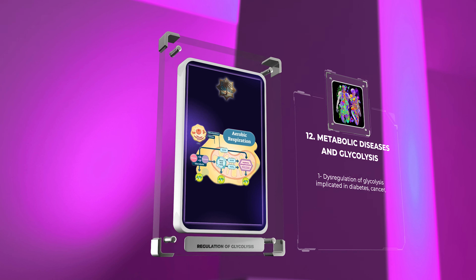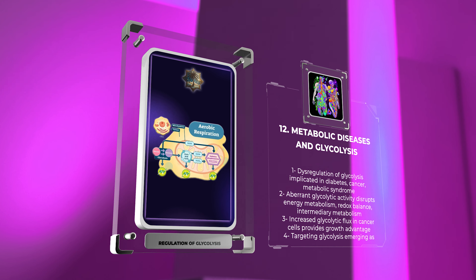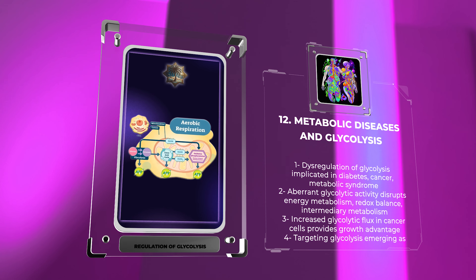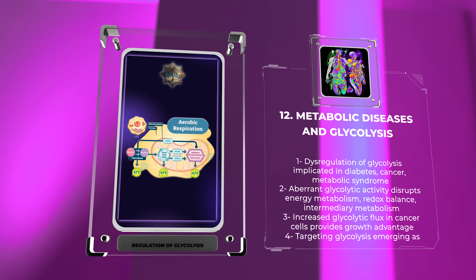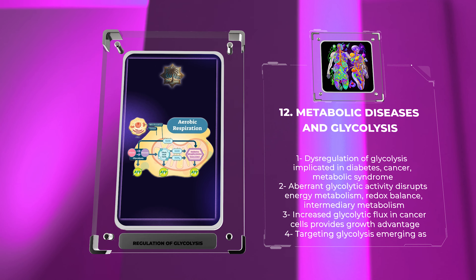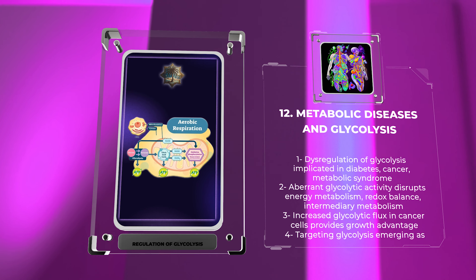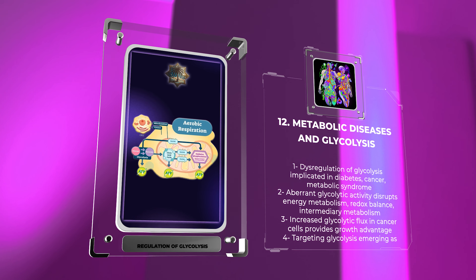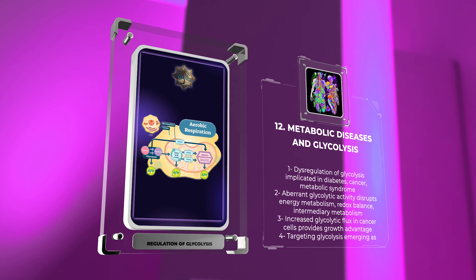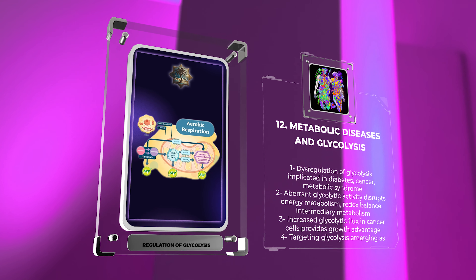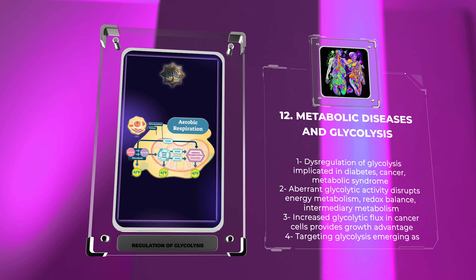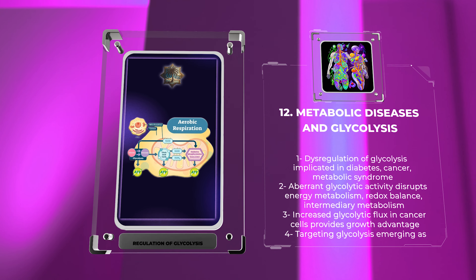Dysregulation of glycolysis is implicated in various metabolic diseases, including diabetes, cancer, and metabolic syndrome. Aberrant glycolytic activity can contribute to pathological conditions by disrupting energy metabolism, redox balance, and intermediary metabolism. For example, the increased glycolytic flux observed in cancer cells, known as the Warburg effect, provides a growth advantage by supporting rapid cell proliferation. Consequently, targeting glycolysis has emerged as a potential therapeutic strategy against cancer.